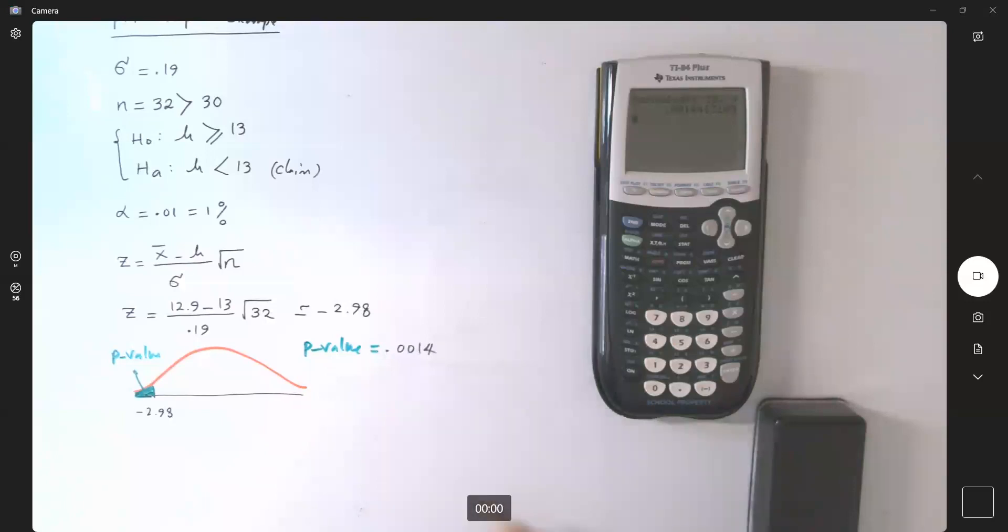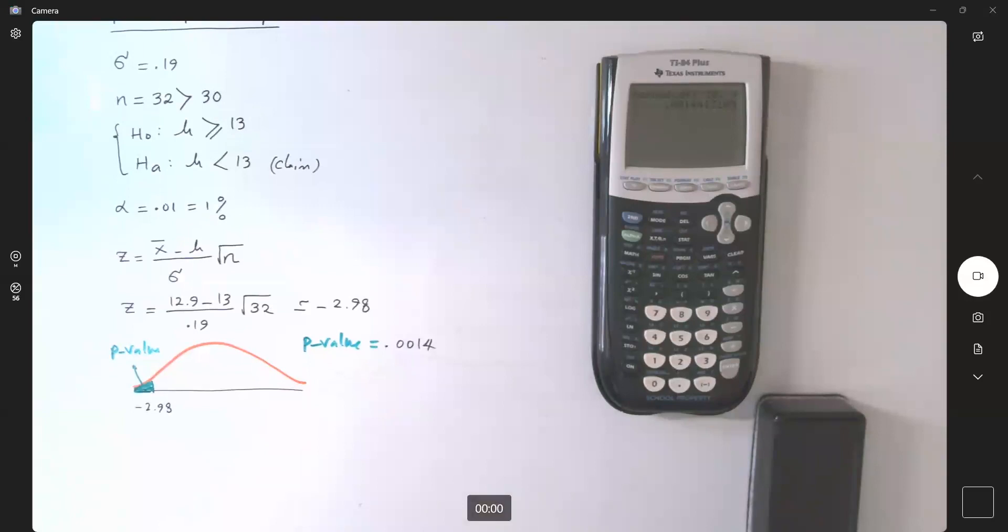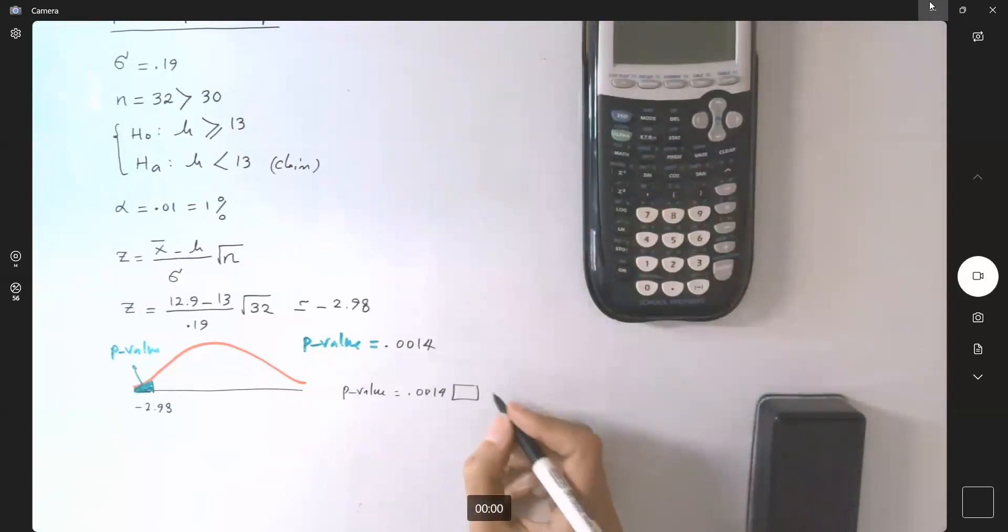Now we need to compare the p-value with our alpha. P-value is 0.0014, is it less than or larger than your alpha, which is just 1%, 0.01?